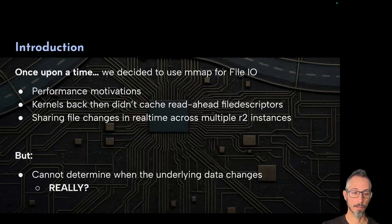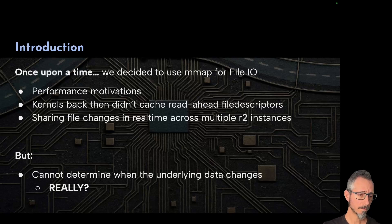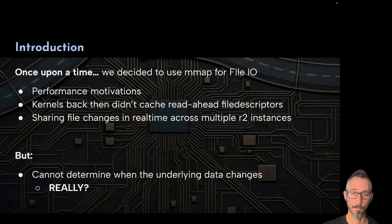Another benefit of using MMAP was that it allowed us to read real-time changes across multiple instances of R2. So if you have the same file loaded multiple times, you can patch one file and get the modified version in the other sessions, which was pretty cool and useful. The problem is that we cannot get notified when the file changes, meaning there is a time-of-access to time-of-use problem that can cause some syscalls or misbehaviors.